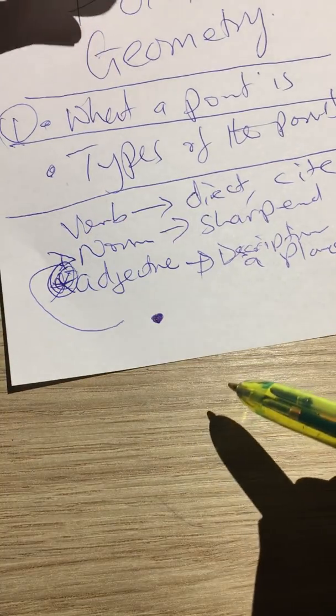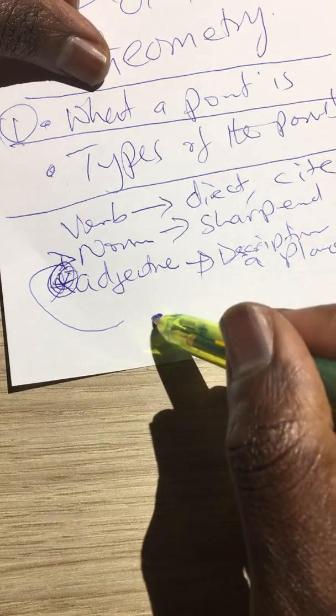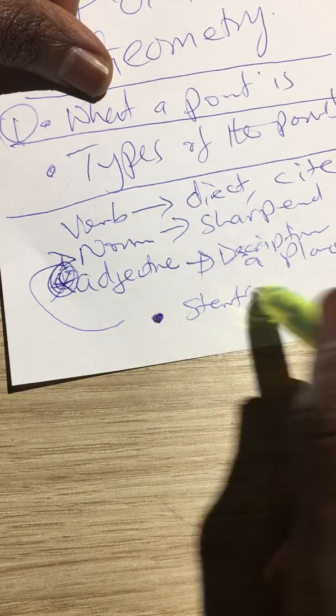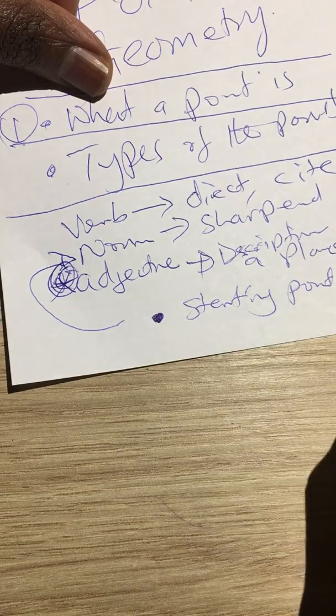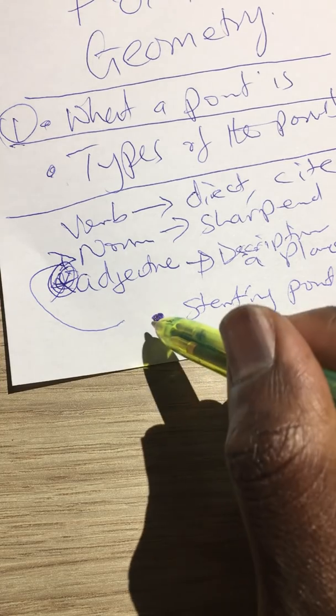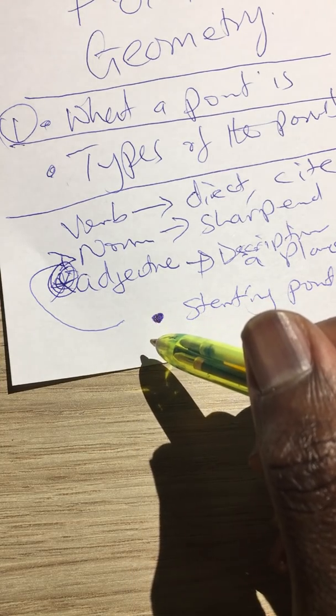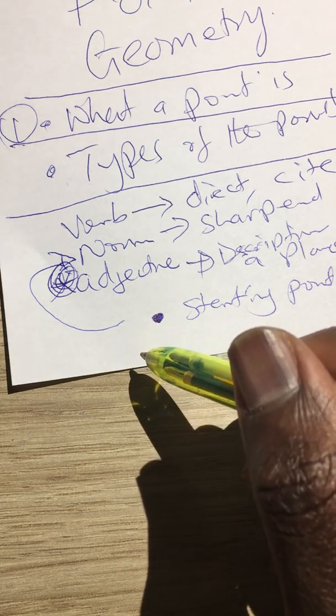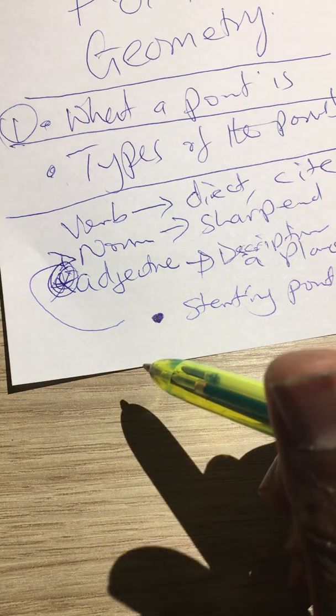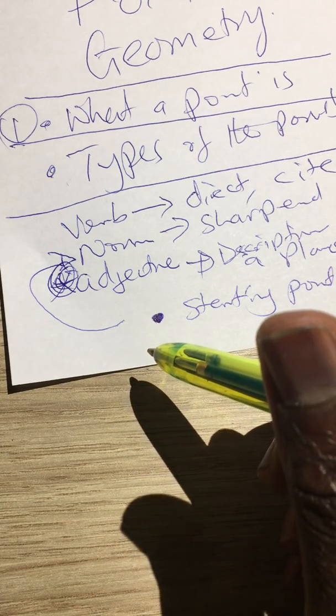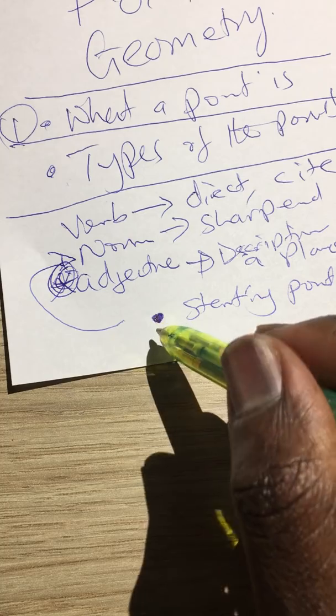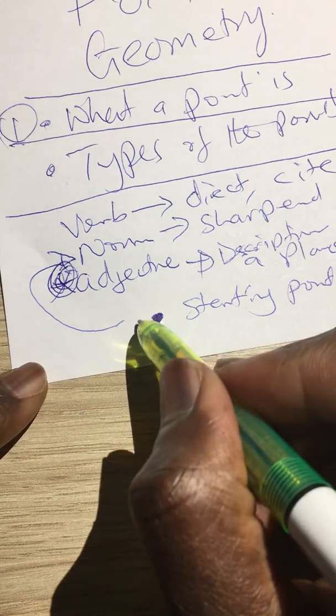So everything in geometry is built on this point, and that's how important the point is in geometry. Even the beginning of the universe might have started from a point, and from there everything else built. So that, my friend, brings us to the first type of point.